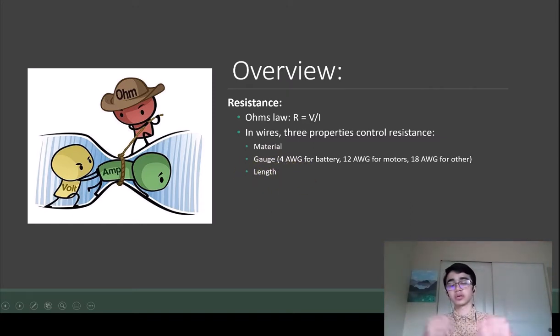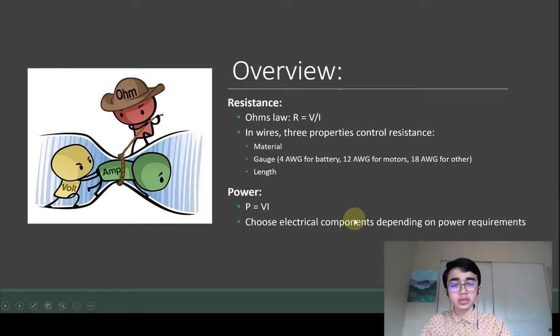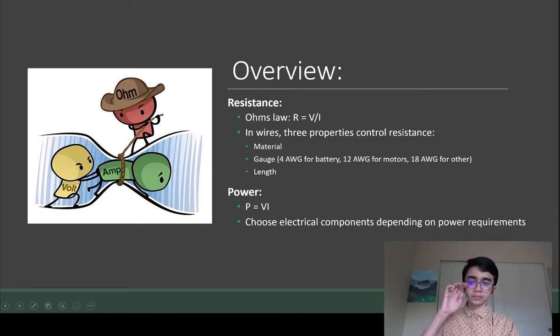Resistance is also determined by length, so we want to reduce the length as much as possible to reduce our resistance. We also talked about power, so power is voltage times current. When you choose your electric components, you need to be sure they can handle the power requirements. Another thing we'll look at with power is when you start analyzing motor curves later on in the series - knowing what power is and what it means will be very useful.